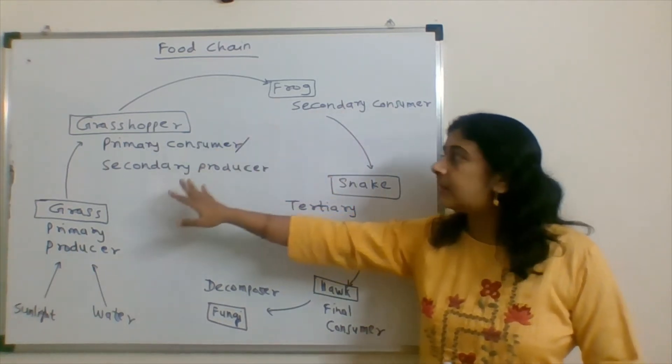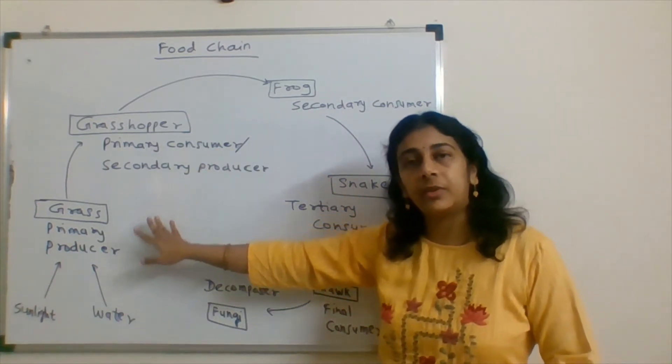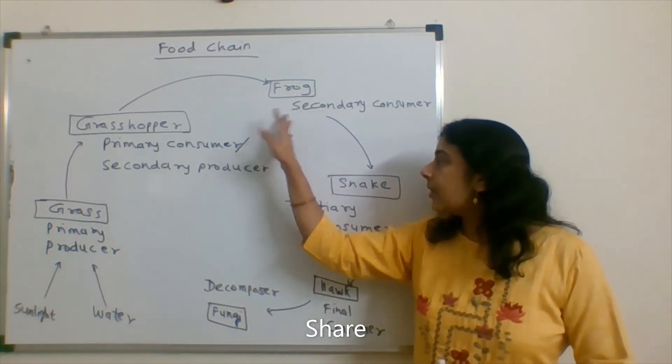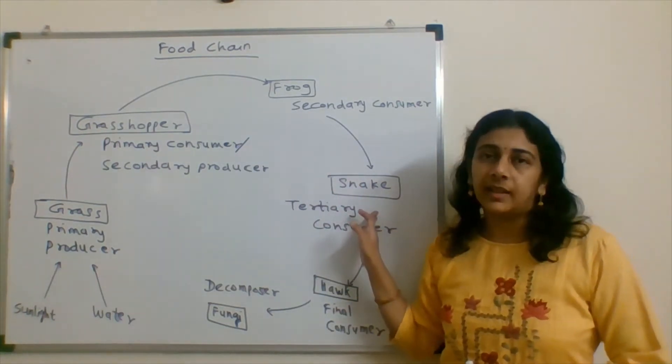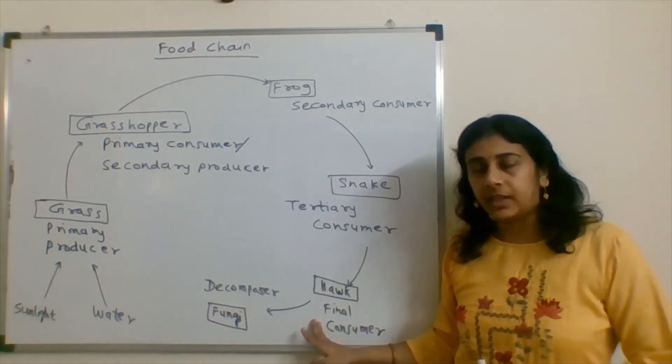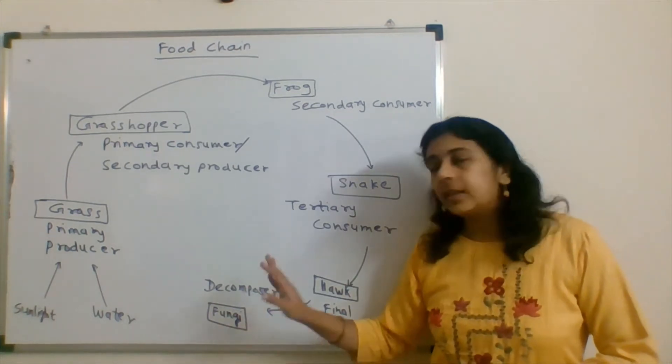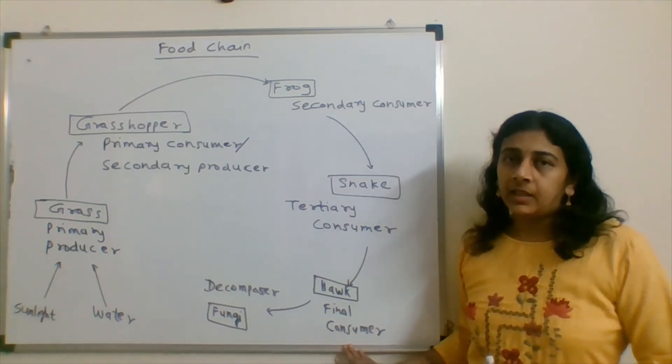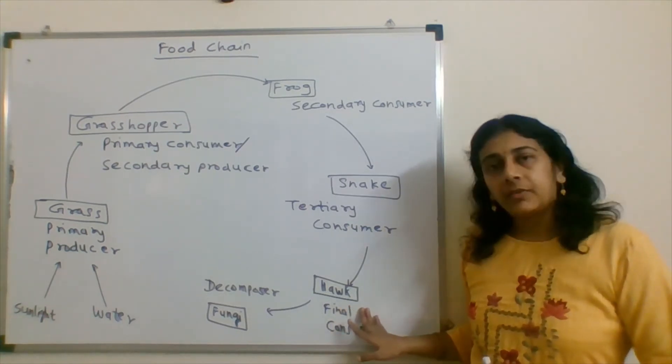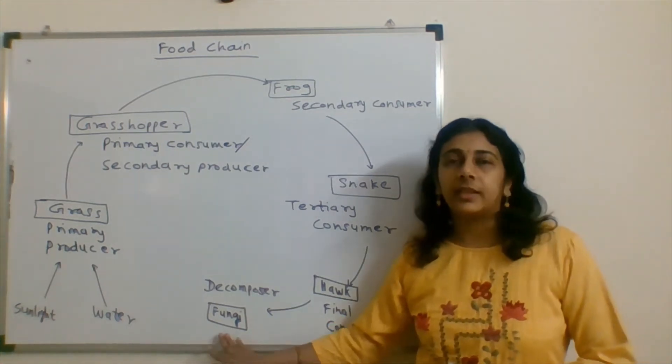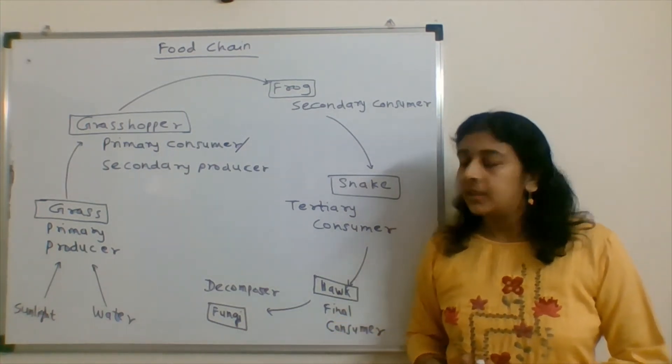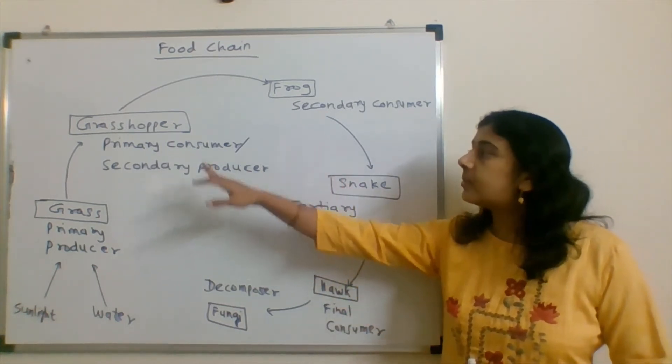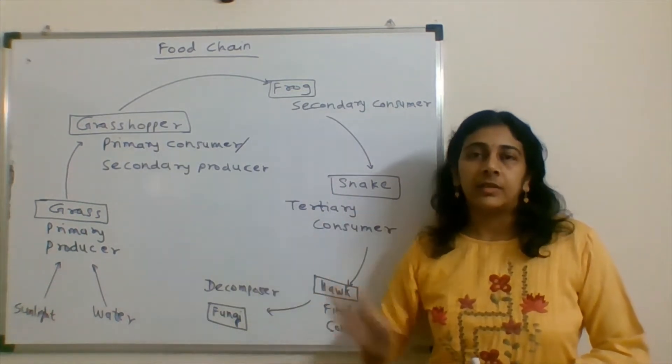It is a carnivore eating grasshopper. Now the frog will be eaten by the snake. Then the snake will have a hawk. After the hawk, decomposers recycle the material. This hawk is a final consumer. After the death of hawk there would be decomposition done by fungi, so this will be a final consumer, a tertiary consumer, and in this way the food chain will be working.